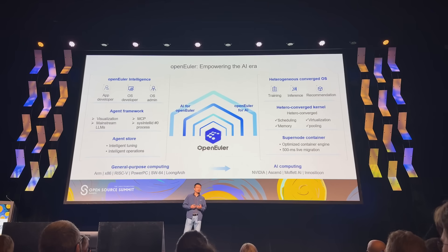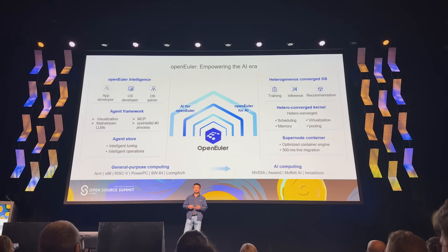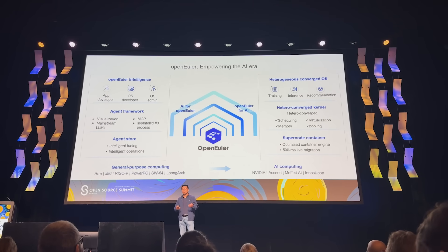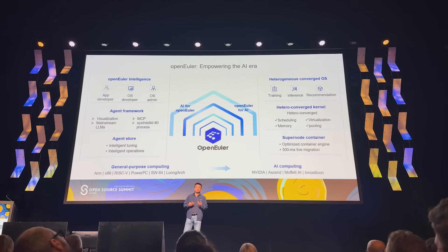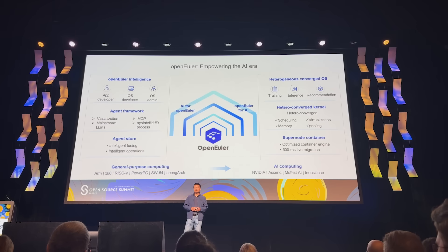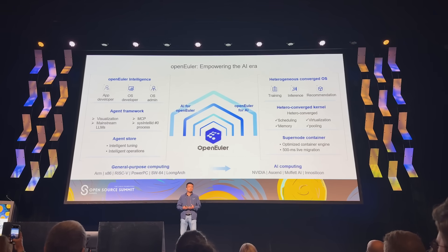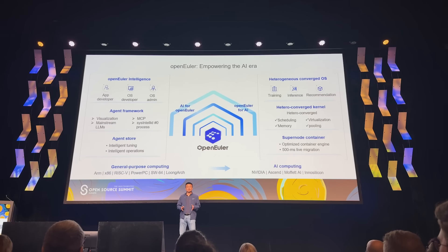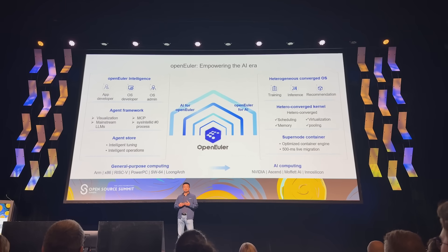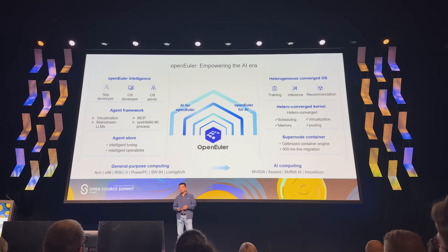AI for OS means we want to use AI technology to rebuild the services of OpenEuler — the operating system or components in the operating system. For example, we want to use natural language to communicate with the operating system. The other direction is OS for AI, which means we want to build an open source AI stack to make development easier and make AI computing more accessible.